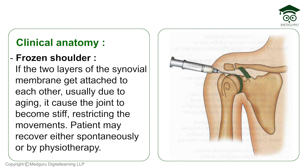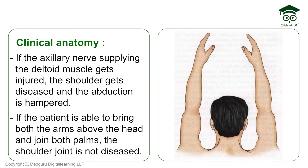Regarding shoulder-tip pain: if there is a sub-diaphragmatic peritoneal injury, referred pain can be felt in the shoulder because C3 and C4 spinal segments innervate both areas. Frozen shoulder occurs when the two layers of the synovial membrane adhere to one another, causing stiffness and restricted movement, usually with increasing age, resolving spontaneously or with physiotherapy. To test for shoulder joint disease, ask the patient to raise both arms overhead and bring their palms together — if they cannot, axillary nerve injury affecting deltoid and overhead abduction is suspected.